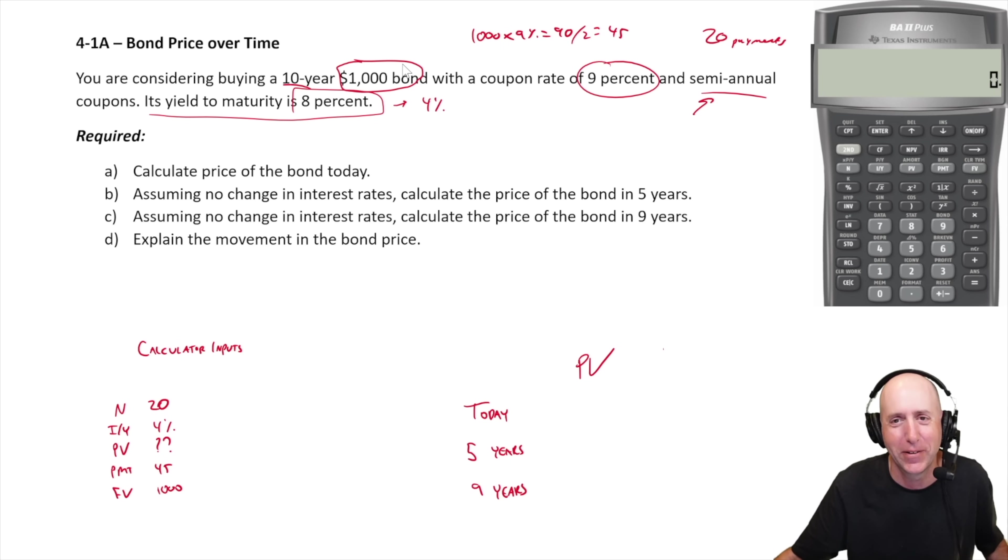Let's solve it. So let me just clear any information I have in my calculator. I hit 20, that's my N. 4 as my I/Y. PV is unknown. PMT is 45 positive, this is cash flowing to us. A thousand FV positive, this is cash flowing to us. And I compute the PV.